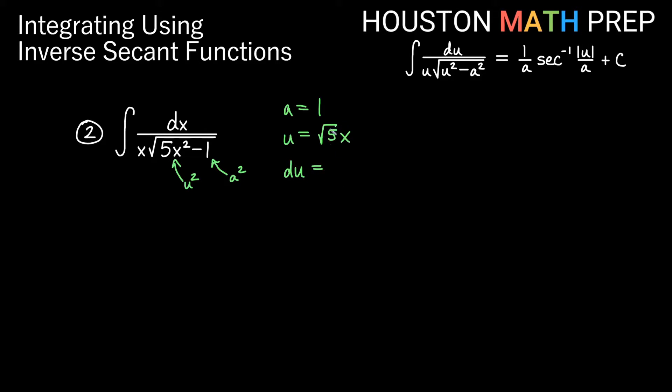Well that would be the derivative of this. So that would be square root 5 dx. Now think about from here what we need to get dx. I would need to divide both sides of this by the root 5 part. So dividing by root 5 here, that's saying 1 over root 5 du is equal to dx. So I have a replacement for dx now. This is going to be 1 over root 5 du.